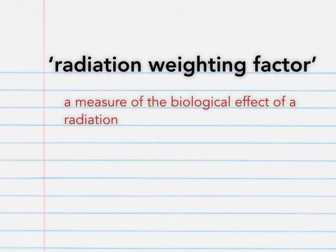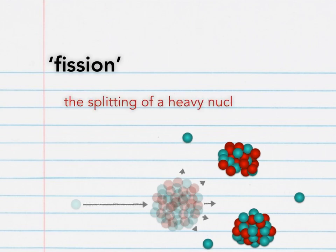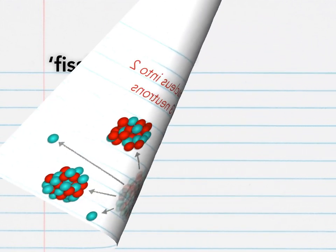Next up, it's fission. Maybe the animation will help us remember this one. Fission is the splitting of a heavy nucleus into two smaller pieces and two or three neutrons. What would happen if each of those neutrons emitted in the fission reaction goes on to cause further fission reactions? Well, in that case, we'd have a chain reaction.